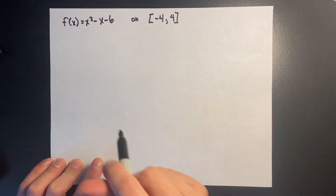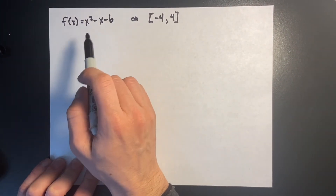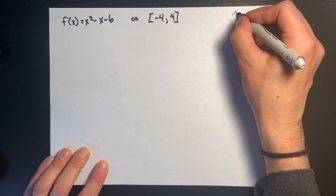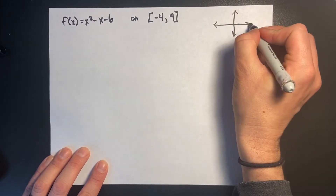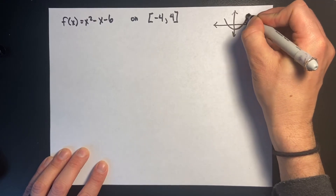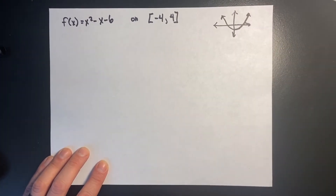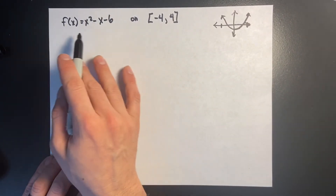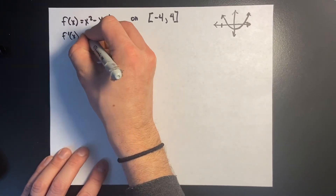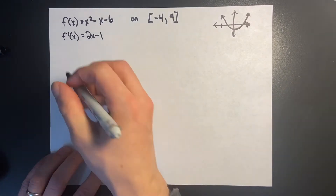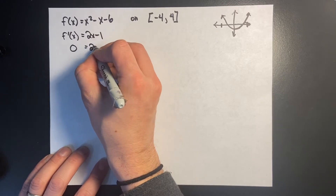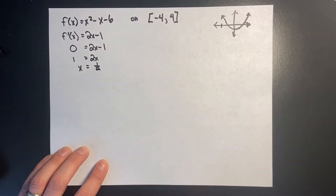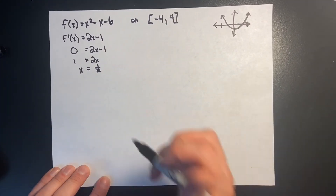In this first problem, I have to find the absolute maximum and the absolute minimum of that function, and I only care about what the graph looks like between negative 4 and 4. So I'm going to take the derivative, set the derivative equal to zero, and that gets me my critical points. After taking the derivative and dividing by 2, I have one critical point.